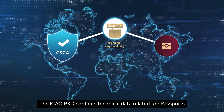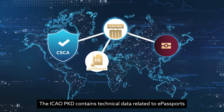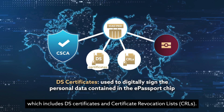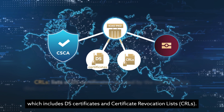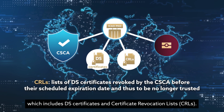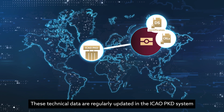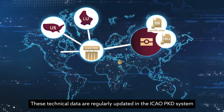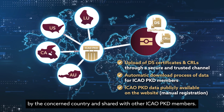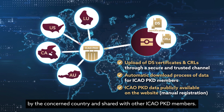The ICAO PKD contains technical data related to e-passports, which includes Document Signer certificates and Certificate Revocation Lists. These technical data are regularly updated in the ICAO PKD system by the concerned country and shared with other ICAO PKD members.